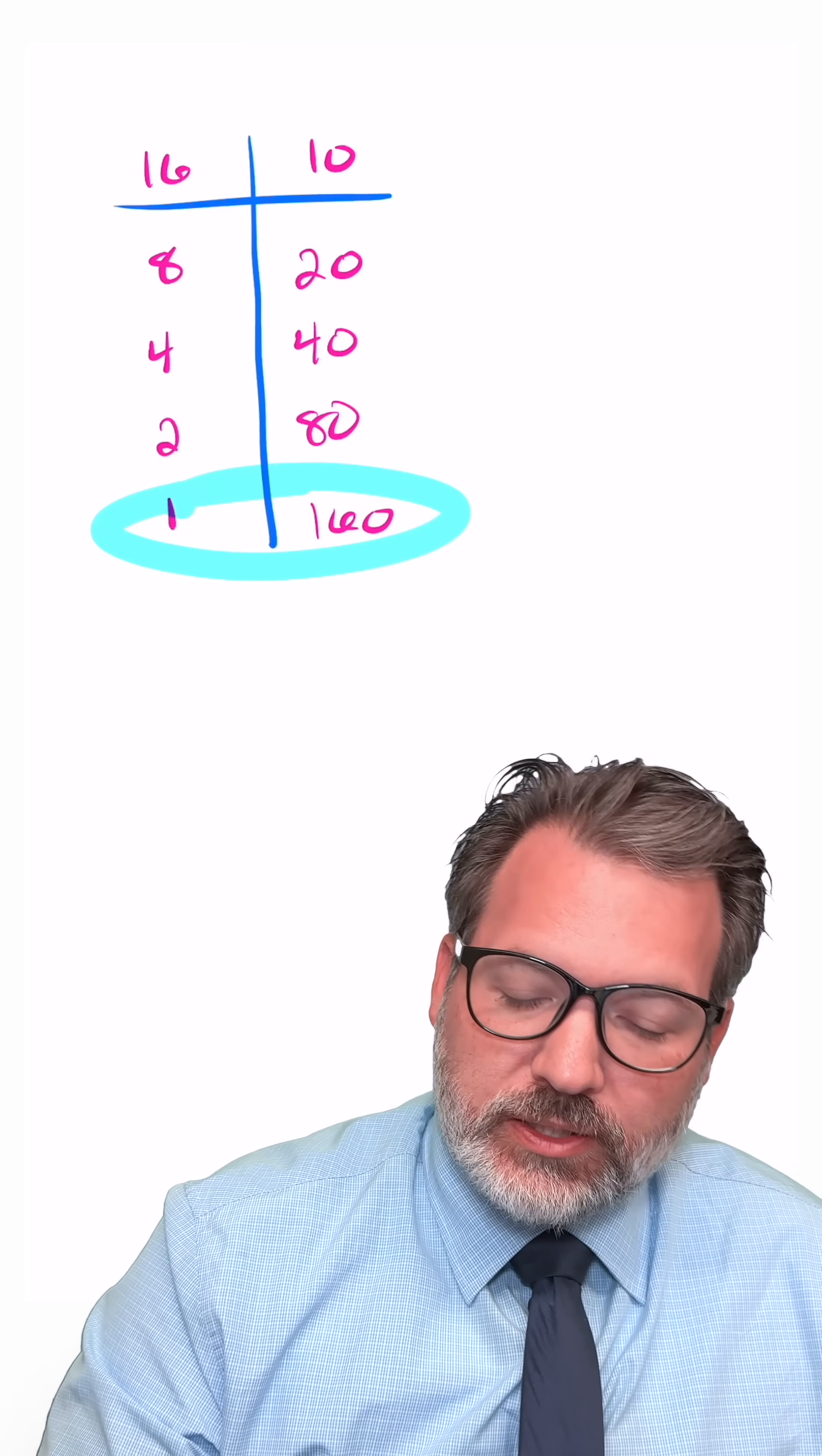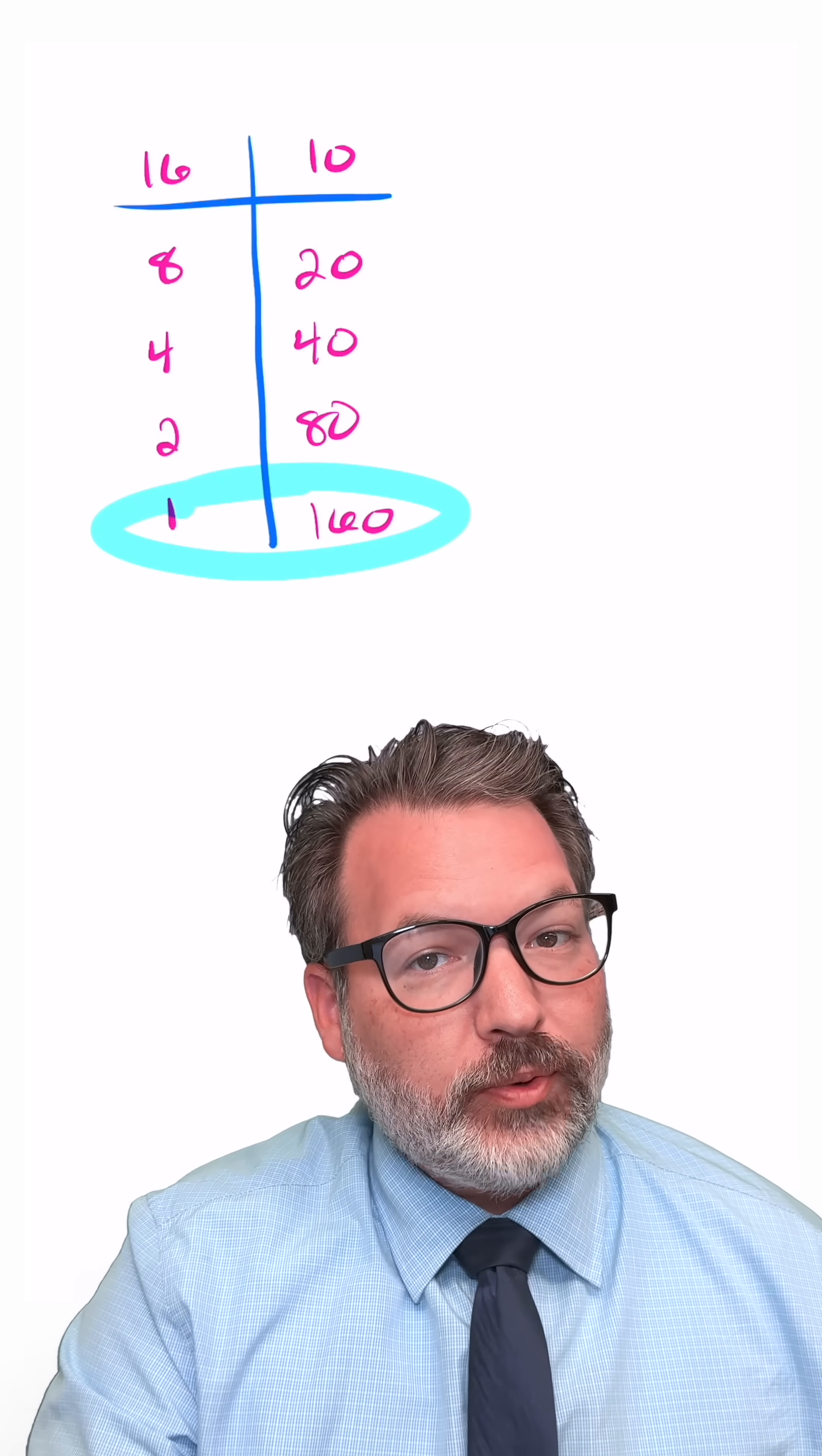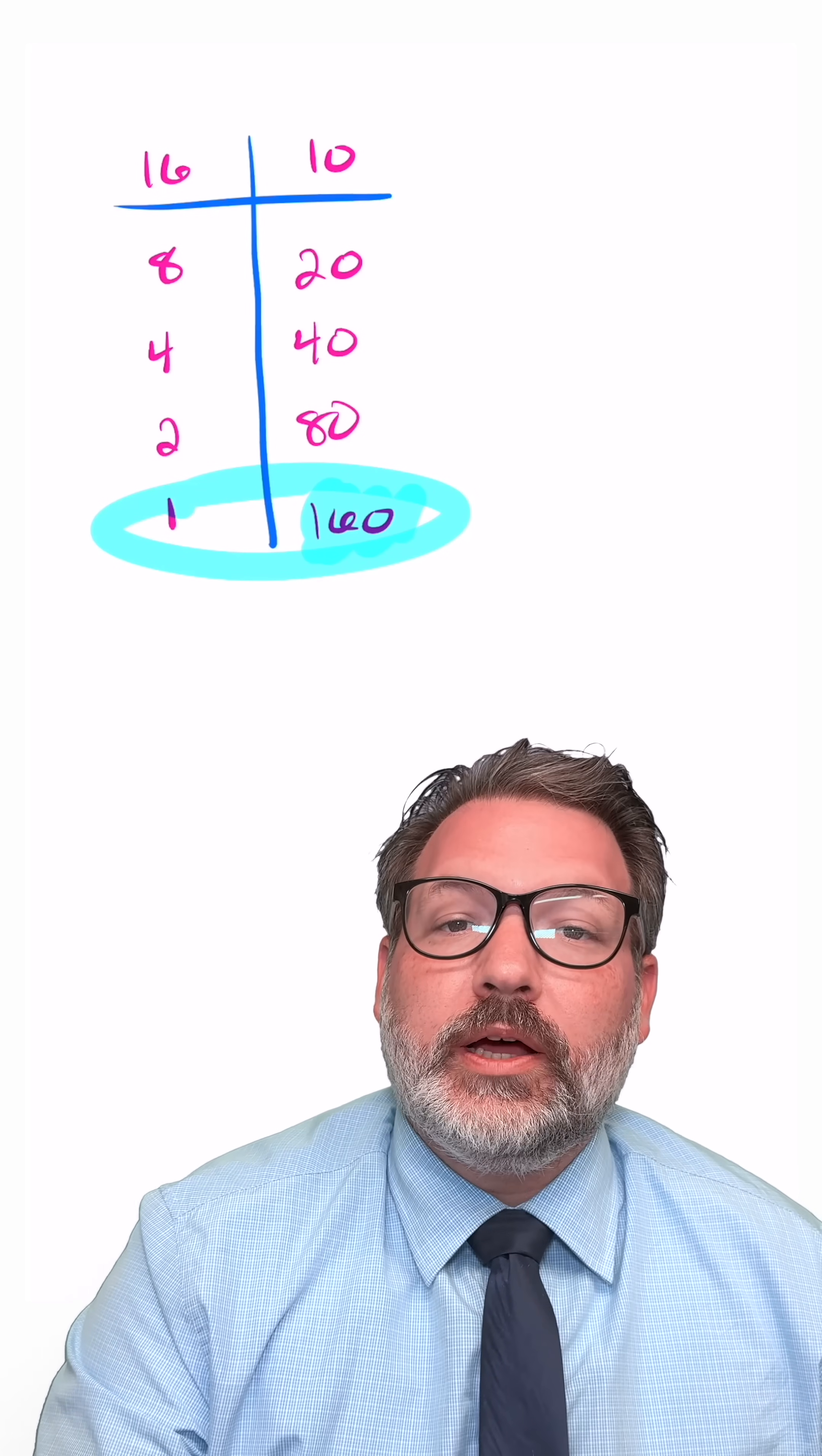At the end of this process we keep any rows that had odd numbers on the left side. We add all of those values from the right side together and we get the product of our original two factors. Indeed you can see here 160.